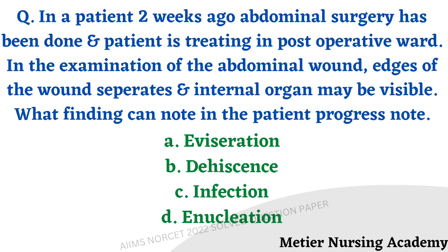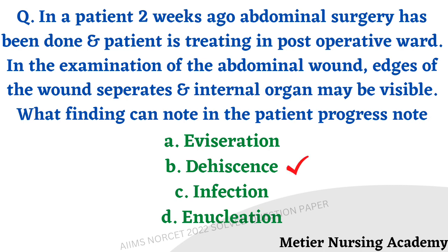A patient who had abdominal surgery two weeks ago is in the post-operative ward. On examination of the abdominal wound, edges of the wound separate and internal organs may be visible. What finding should be noted in the patient's progress note? Options: evisceration, dehiscence, infection, enucleation. The right answer is option B, dehiscence. Evisceration means protrusion of organs, but here the edges only separate and organs may be visible without protruding out. Dehiscence means separation of the wound. Enucleation is surgical removal of the eye globe, so it is not applicable here.